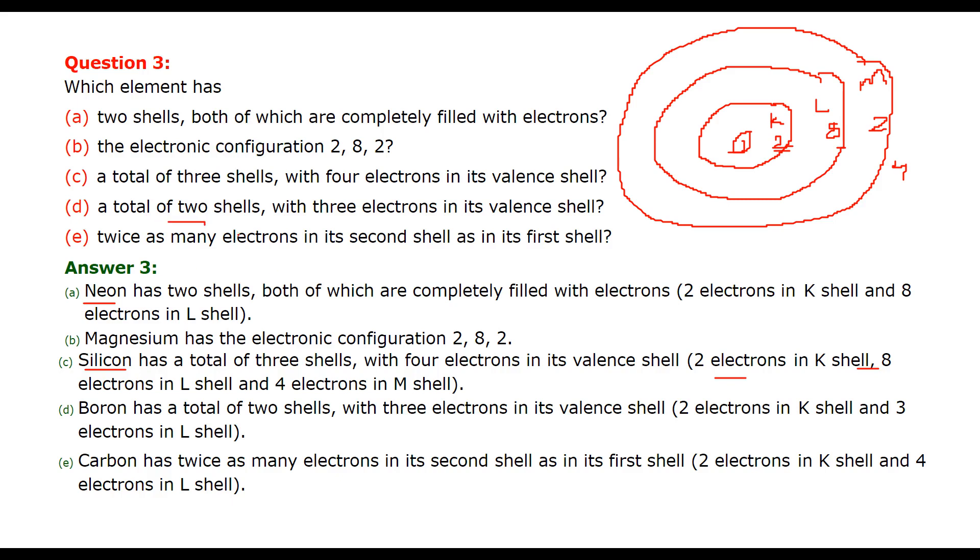Then total of two shells, three electrons in the valence shell. So it is two here in the K and three here. So there are five, and five means we are talking about boron.